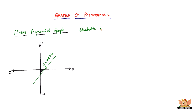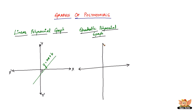The next one is the quadratic polynomial graph. We have the y-axis and the x-axis. The shape of a quadratic polynomial graph is going to look like a U. It can be inverted or upright, but it will always have this U-shaped curve. That is the kind of shape you get when you plot the graph for a quadratic polynomial.